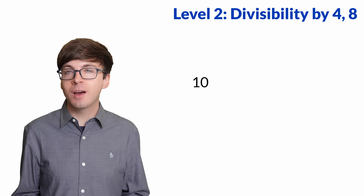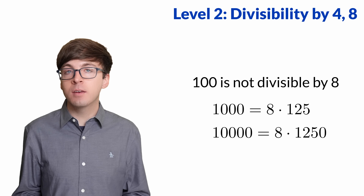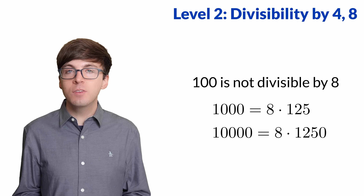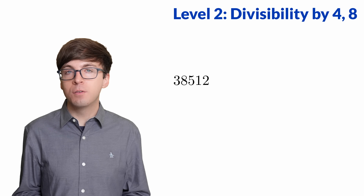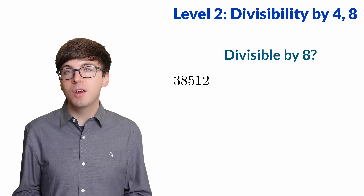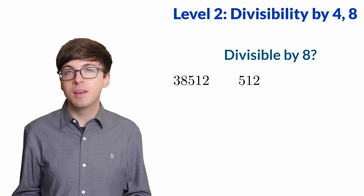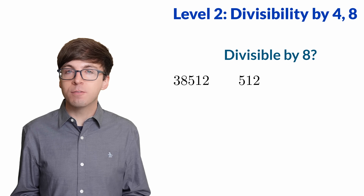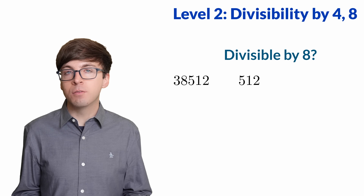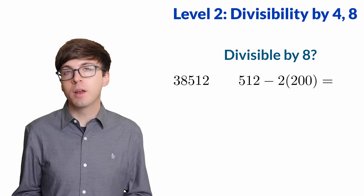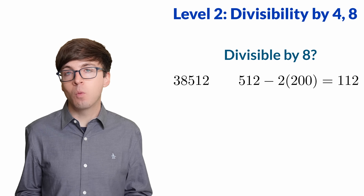To check for divisibility by 8, this gets a touch harder since 100 is not divisible by 8. But 1000 and all the higher powers of 10 are. So we can just look at the 3 digits on the right. Say we want to check if 38512 is divisible by 8 — we can just look at the rightmost 3 digits and check that 512 is divisible by 8, which it is. You can take the trick a bit farther: since 200 is divisible by 8, we can always convert the 100's place digit to be a 0 or a 1, so instead of checking 512, you could check 112.